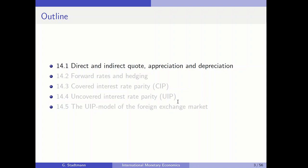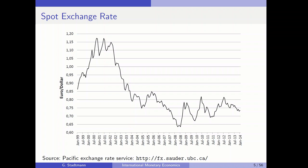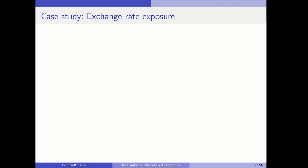In the first graph you can see the exchange rate — euros per one dollar — over time. This graph starts in January 1999 when the euro was introduced. You can see that in the first period the exchange rate was increasing, and then after 2002 it decreased quite tremendously. This plays a very important role in the first case study, as the exchange rate seems to be quite volatile.